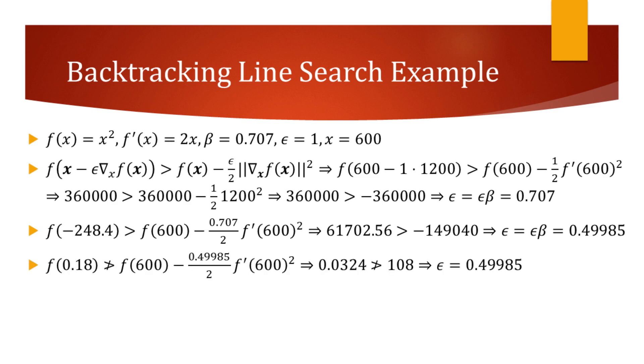On our third iteration, the inequality no longer holds true, so we no longer update the epsilon. As a result of backtracking line search, we end up with the learning rate that is approximately 0.5. By using this epsilon, the new point after gradient descent is 0.18, and the value of the function is approximately 0.0324.